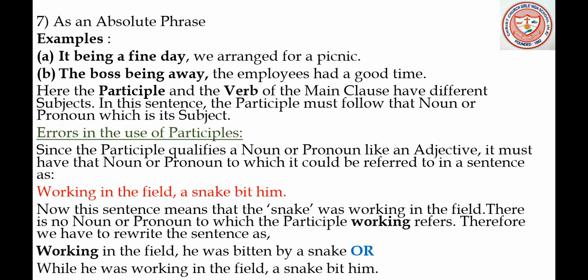As an absolute phrase. Examples: 'It being a fine day, we arranged for a picnic.' 'The boss being away, the employees had a good time.' So 'it being a fine day' and 'the boss being away' are absolute phrases. Here the participle and the verb of the main clause have different subjects.